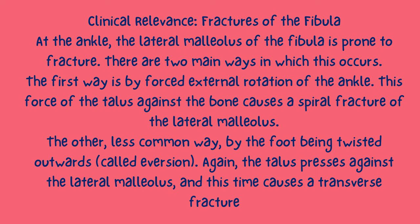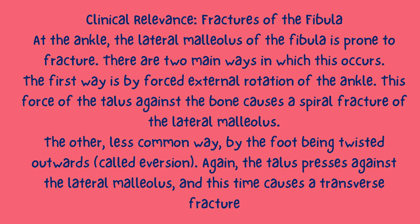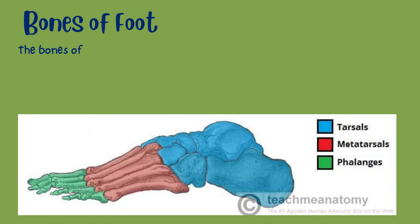Clinical relevance — fractures of the fibula at the ankle: the lateral malleolus of the fibula is prone to fracture. There are two main ways this fracture occurs. The first is by forced external rotation of the ankle, where force of the talus against the bone causes a spiral fracture of the lateral malleolus. The other, less common way is by the foot being twisted outwards — called eversion — where the talus presses against the lateral malleolus and causes a transverse fracture.